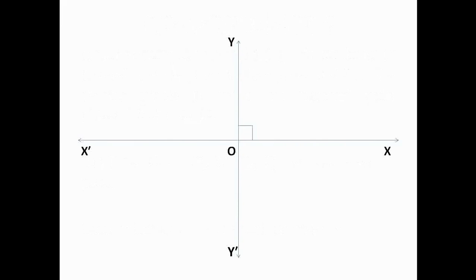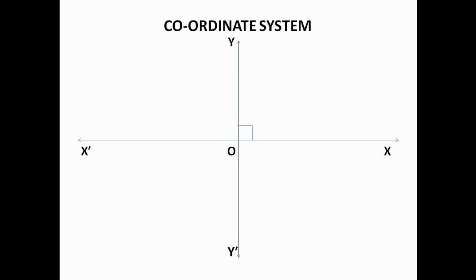Students, in this picture you see two lines — they are perpendicular to each other. The line which is placed horizontally, that is x-ox, is known as the x-axis. And the line y-oy' is known as the y-axis. These two lines intersect at O. O is known as the origin. So this is our coordinate system.